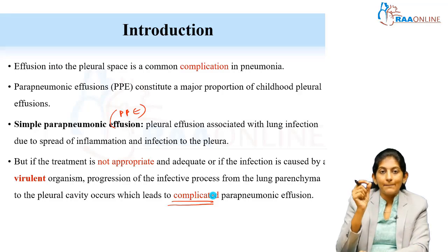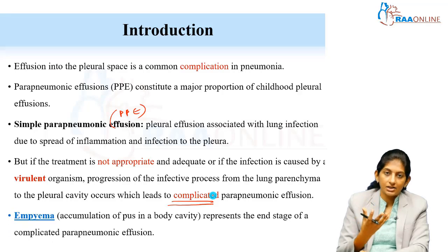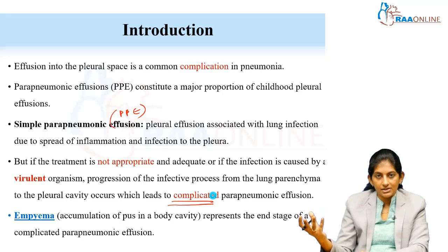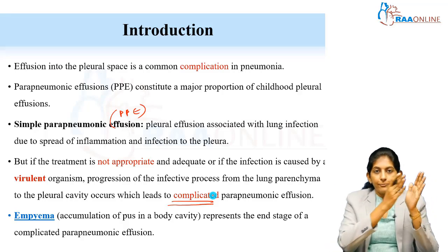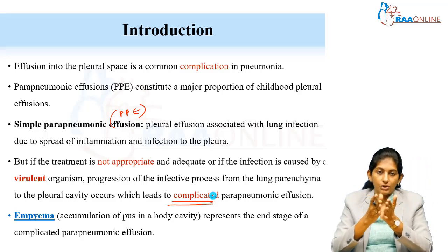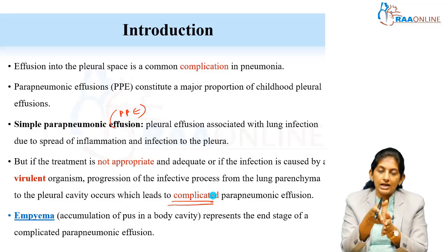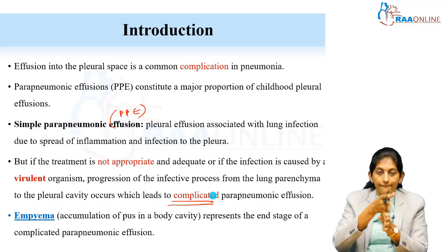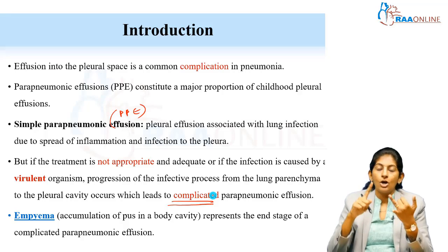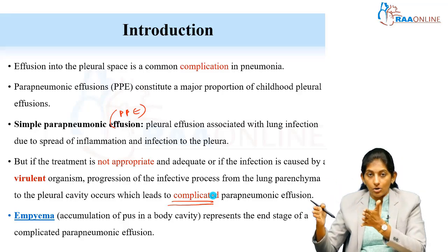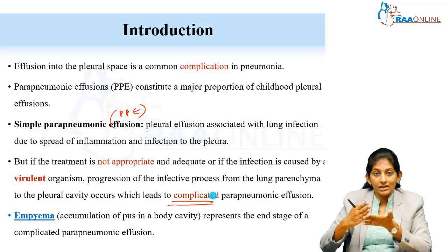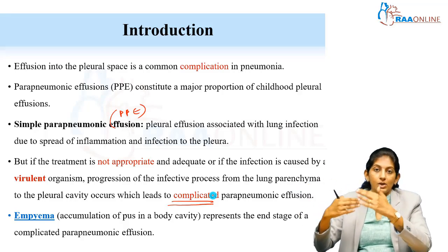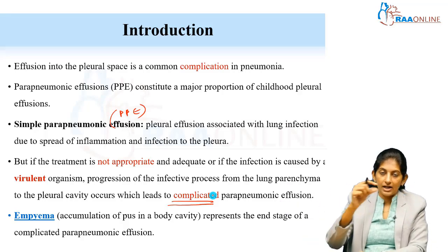Empyema means pus collection in a body cavity. Empyema thoracis means pus collected in the pleural cavity. This is a continuum: starting as a simple PPE from lung parenchymal inflammation spreading to the pleura, it halts there when hit with the right antibiotics at the right time and dose. But when it progresses — due to a very virulent organism or an insensitive antibiotic — it becomes a complicated parapneumonic effusion, and eventually the effusion converts to pus, developing into empyema thoracis.